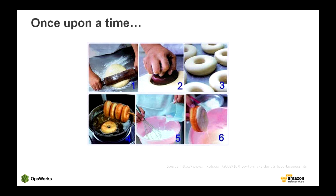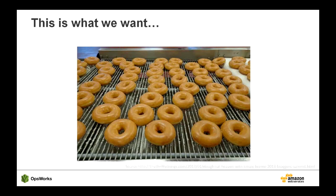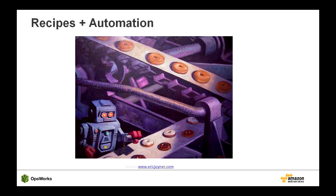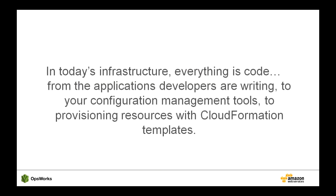Once upon a time, we used to handcraft our environments — everything from provisioning hardware to creating database tables. That can be nice when you have the time, but it's hard to ensure repeatability, especially at scale. What we really want is consistency as we scale, and everything comes out exactly the same. We use recipes to describe how to configure our environment and automation to ensure consistency across all our resources. Code is really the output of what your developers create, but it's also the configuration of your environment and the servers the software runs on. Making sure all this code works together and is predictable is an important aspect of coding in the cloud.